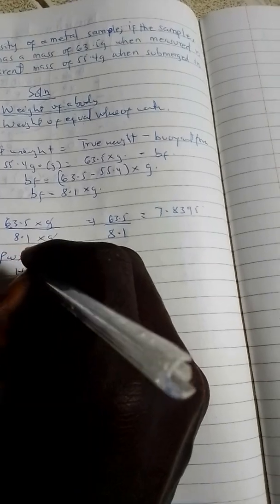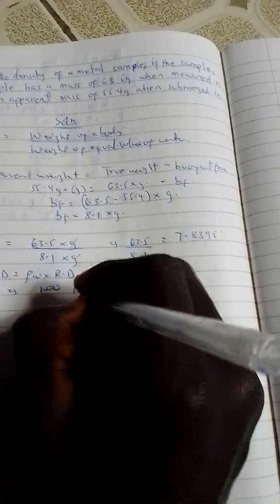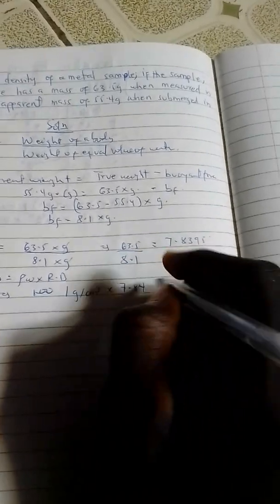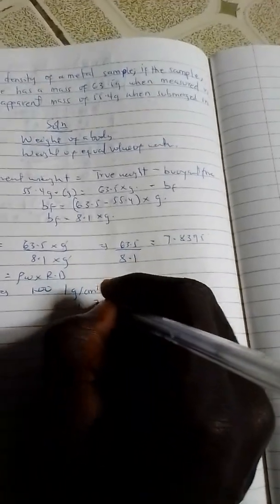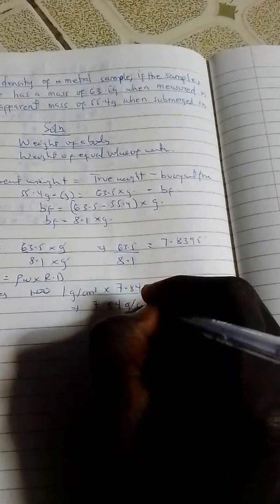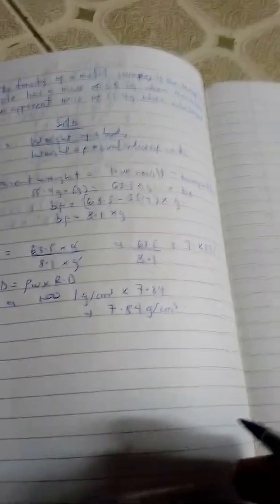Let's use the density of water in grams. We get 1 gram per centimeter cubed multiplying 7.84, giving us 7.84 grams per centimeter cubed as the density of the metal sample.